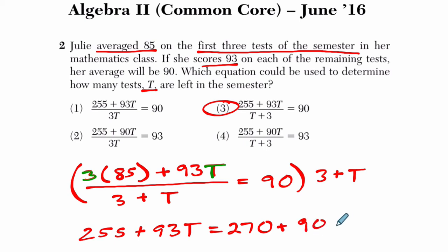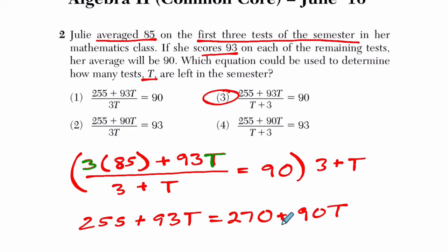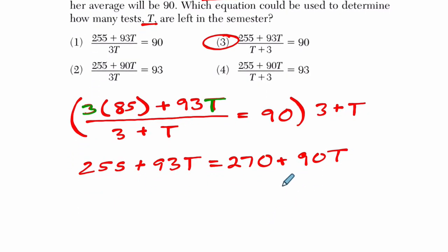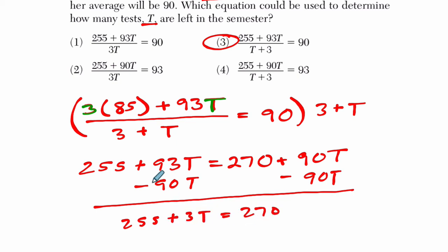And now we're dealing with a linear equation, which is not so bad to manage. What I would do here is I would subtract 90t from both sides. And then I get 255 plus 3t equals 270. 93 minus 90 is 3.